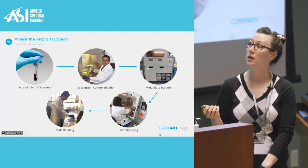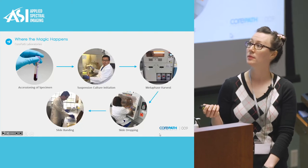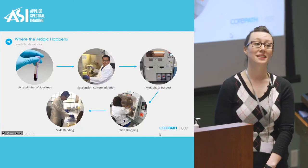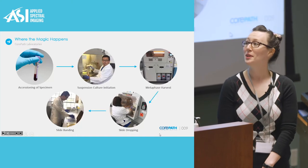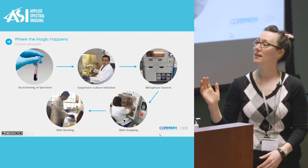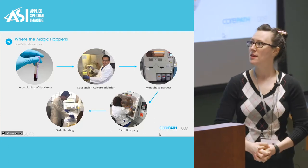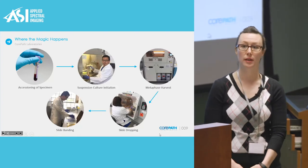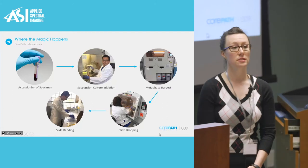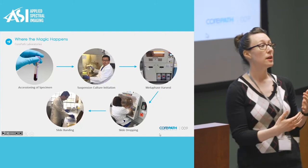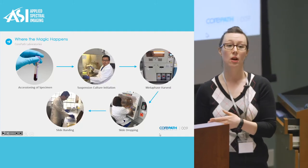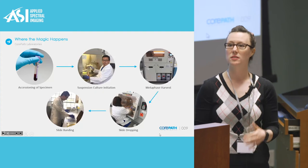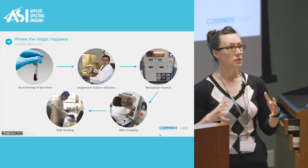Next, we take our cultures after incubation and put them into our Hanabi P2 automated harvester. We like to call her Hannah because her name is Hannah B. She is a piece of equipment relatively new to our lab that greatly increases the efficiency and consistency of our cytogenetics laboratory. It allows consistent harvesting and frees up technologist time to do other things while our harvester is working. This is one of the first stages where you can see automation stepping into our laboratory.